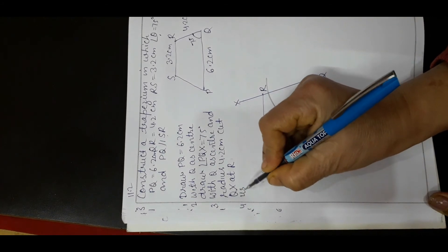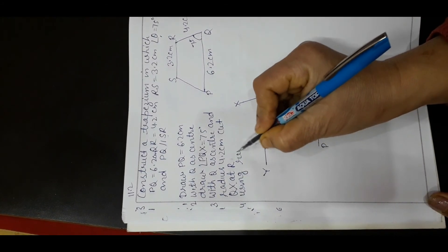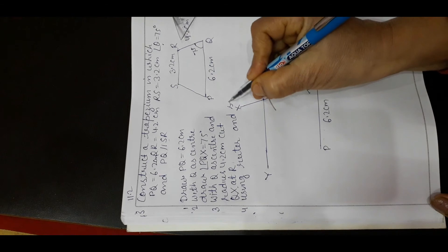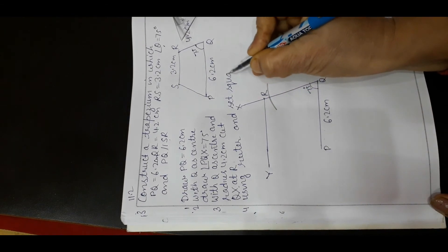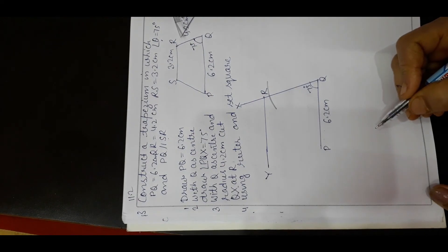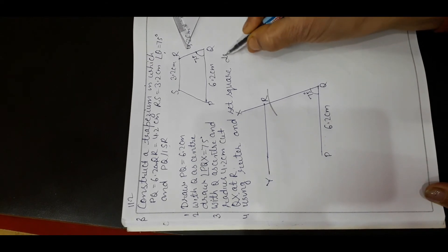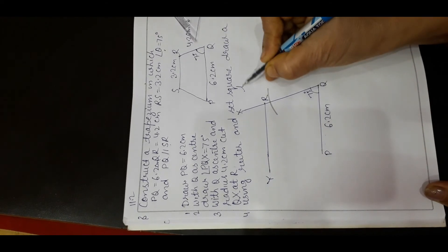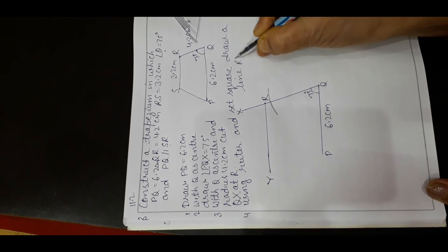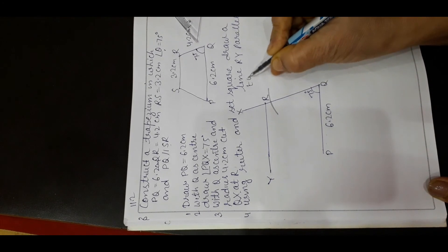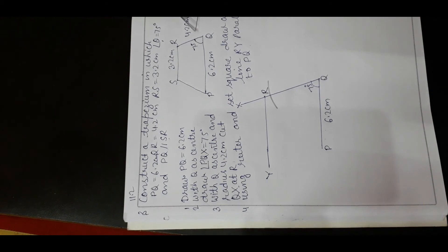Write the step: using ruler and set square, draw a line RY parallel to PQ.